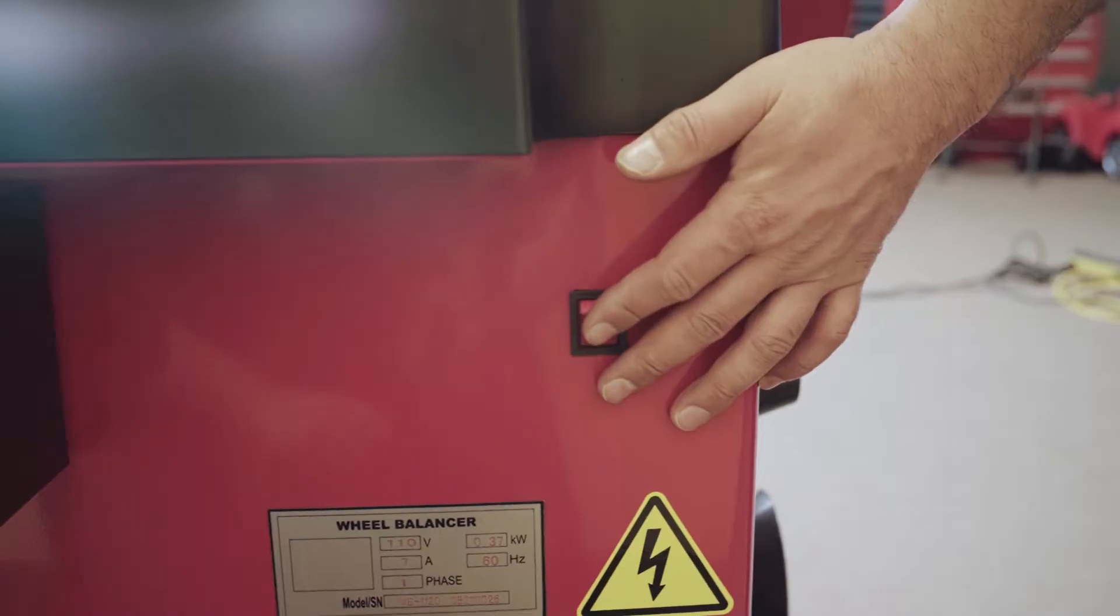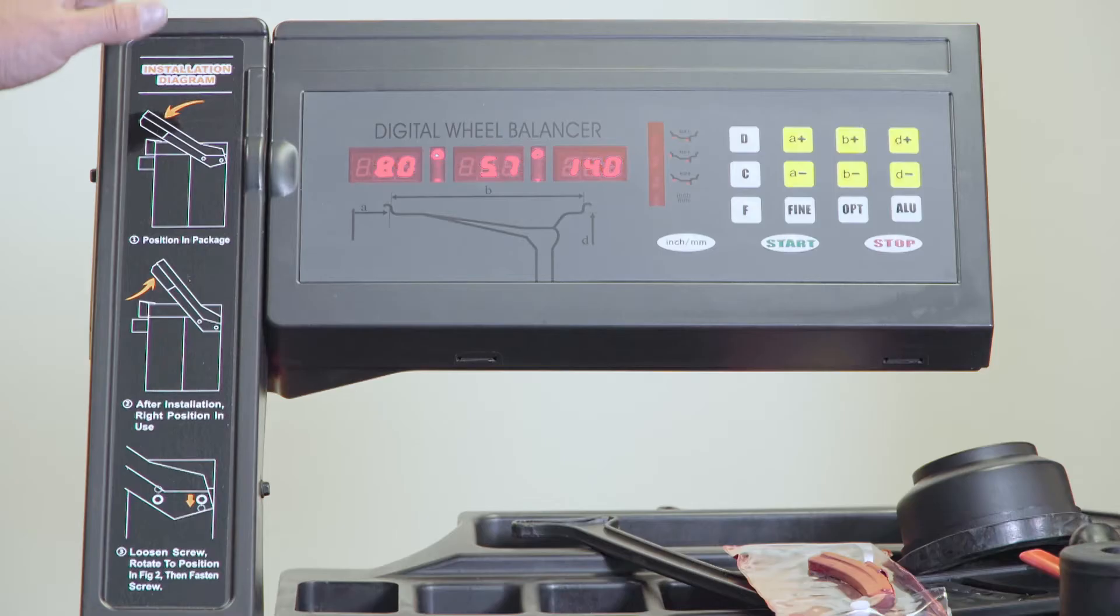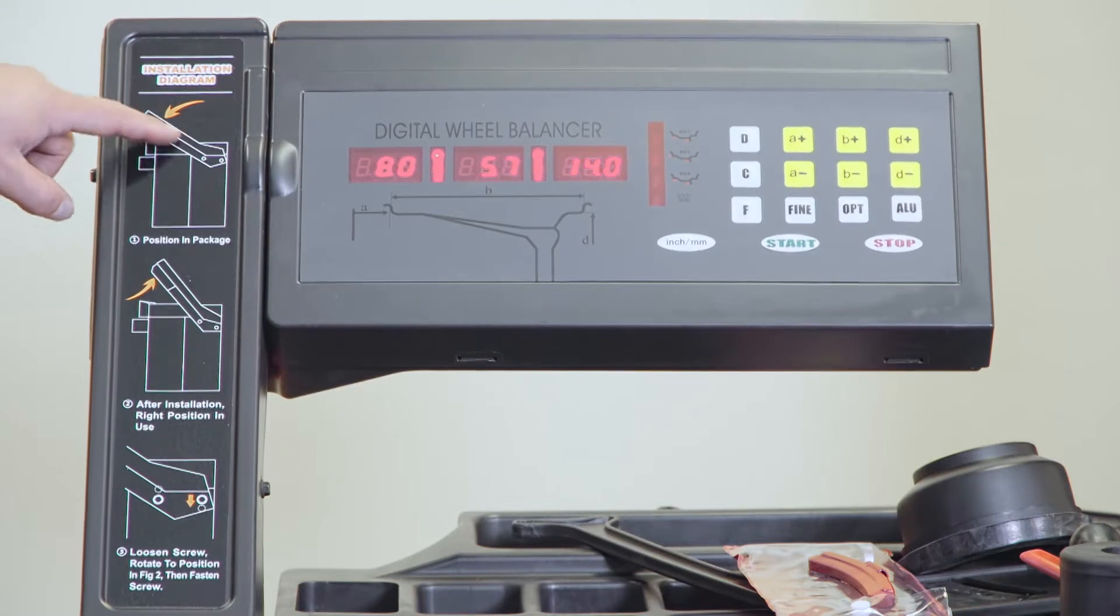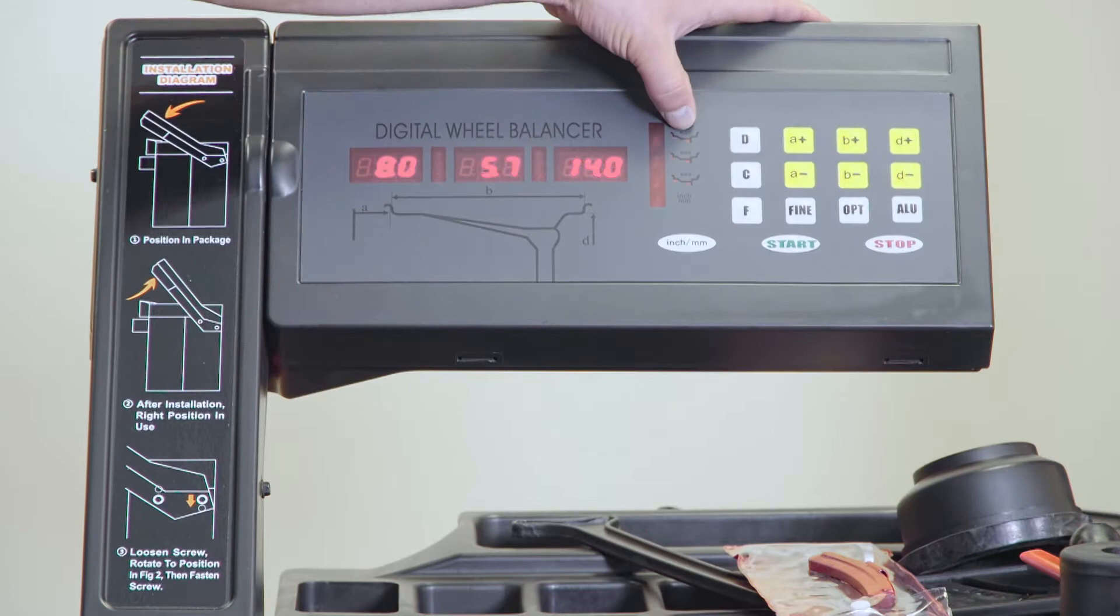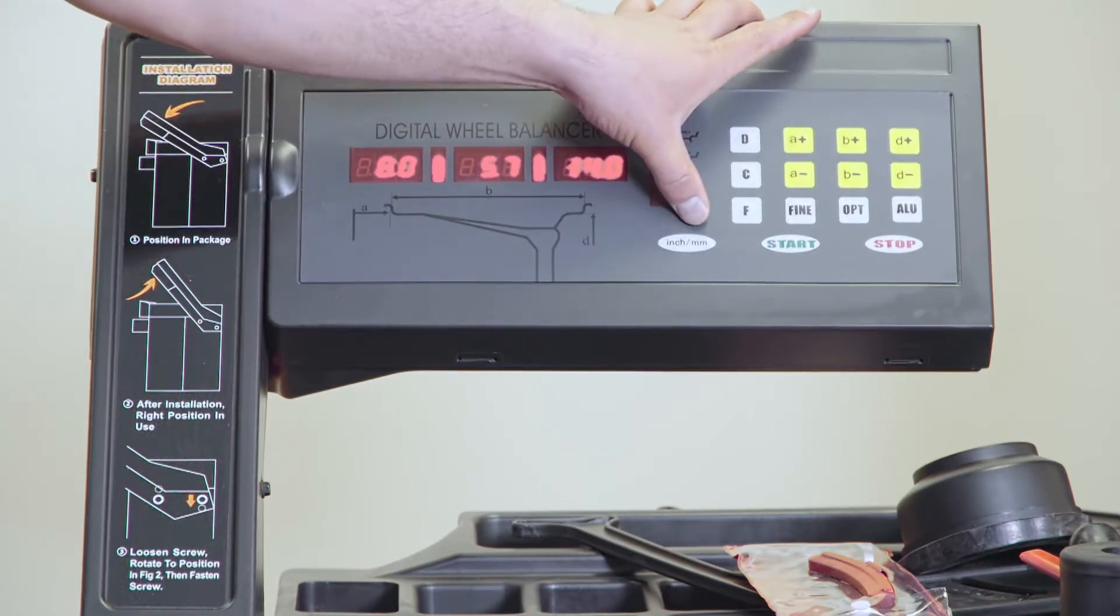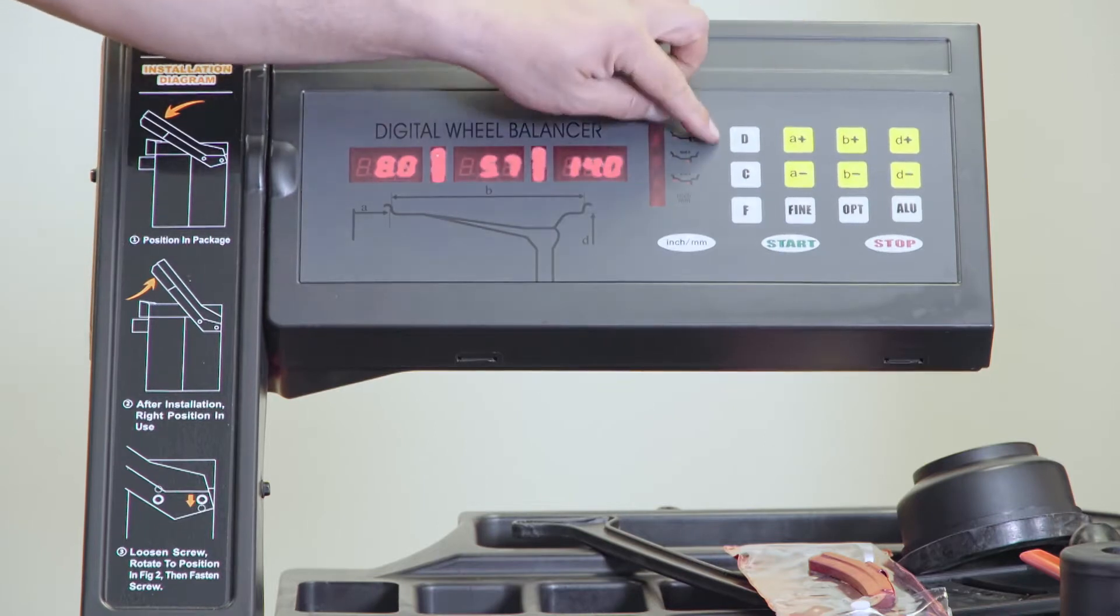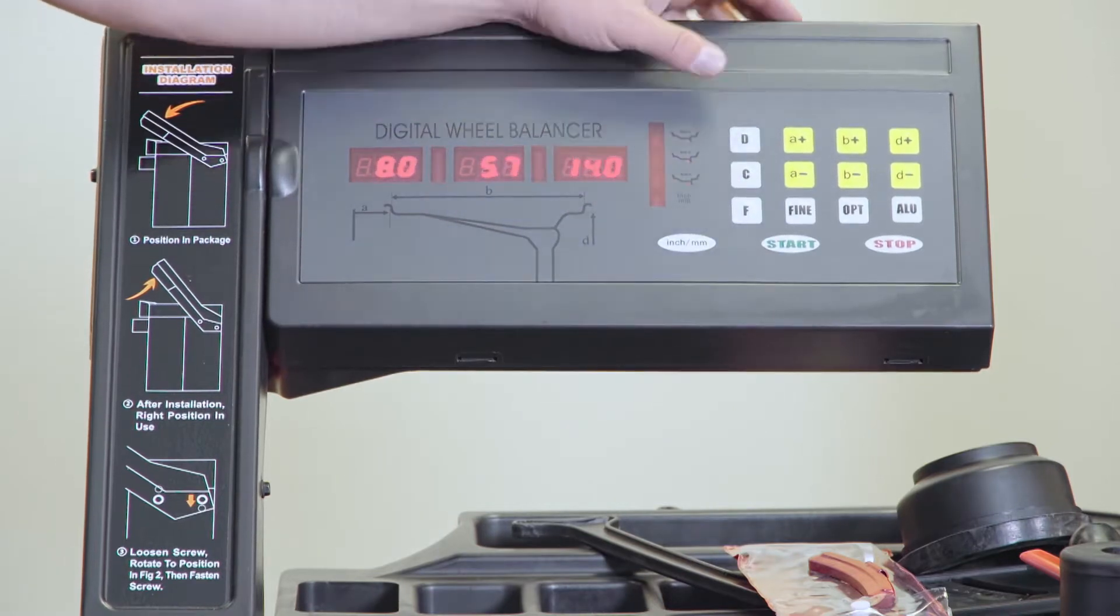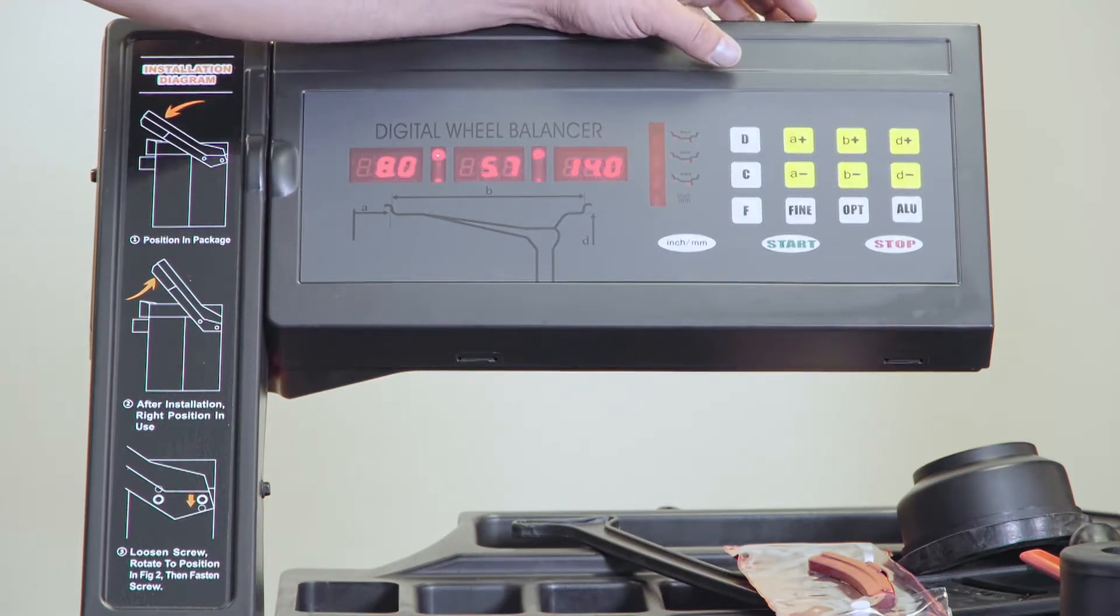Power on the machine. When you get the machine you can set it up as we did here or you can put it a little bit lower. It's adjustable depending on how you feel comfortable. You got aluminum 1, aluminum 2, aluminum S, inches and millimeters. These buttons will explain when we're doing the calibration and settings.